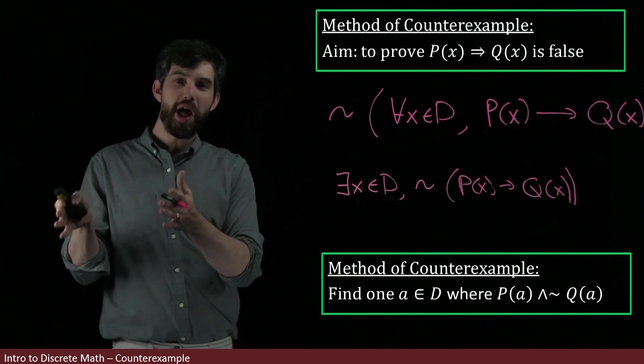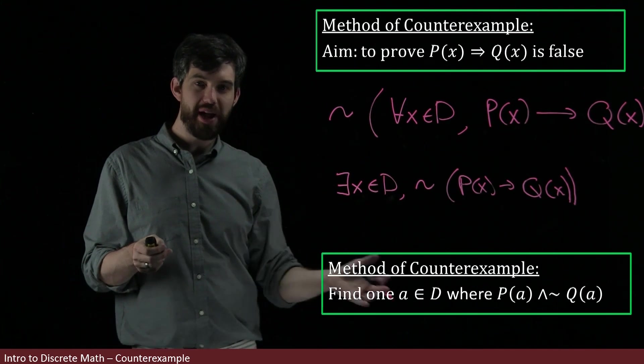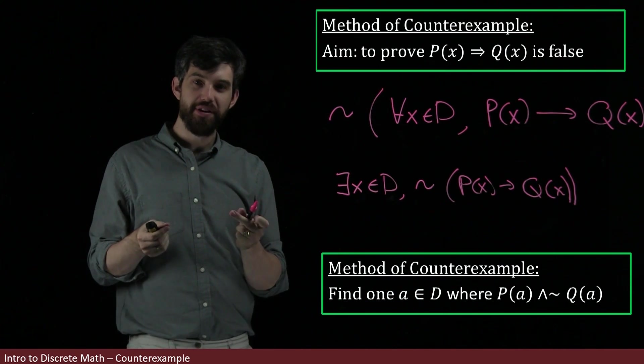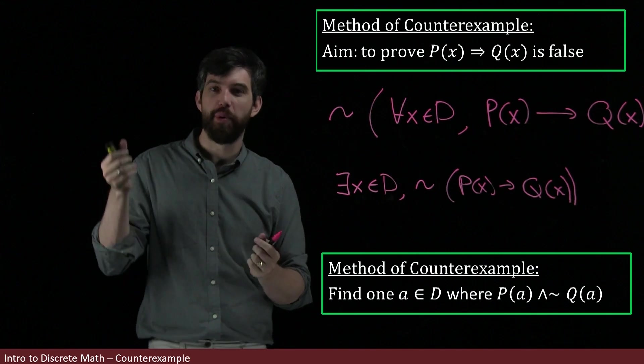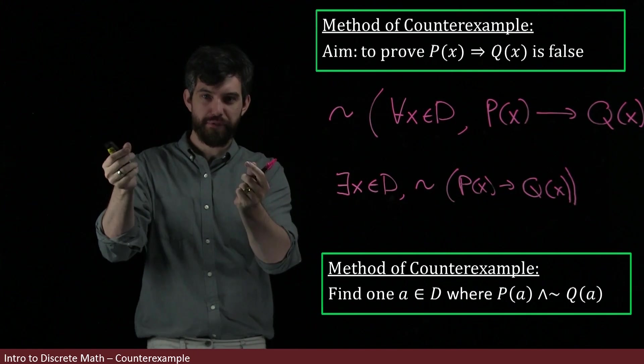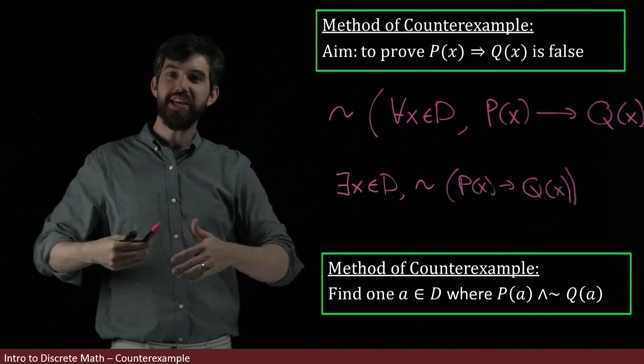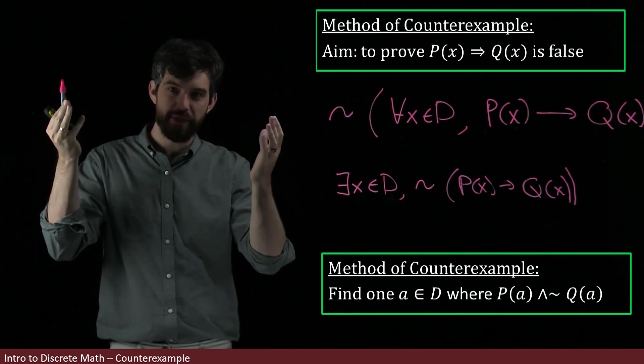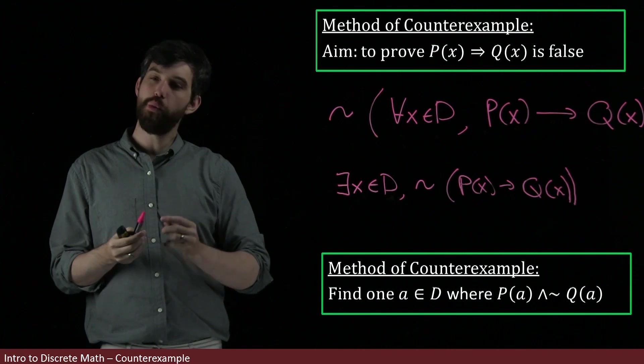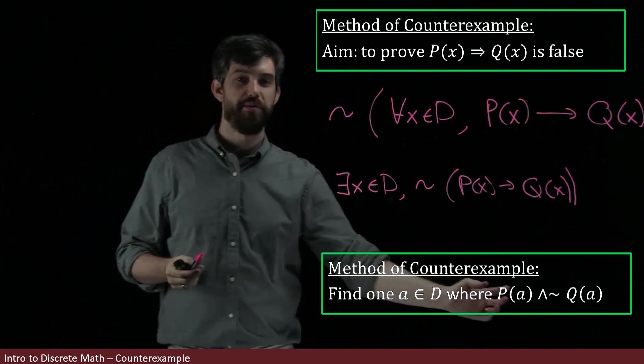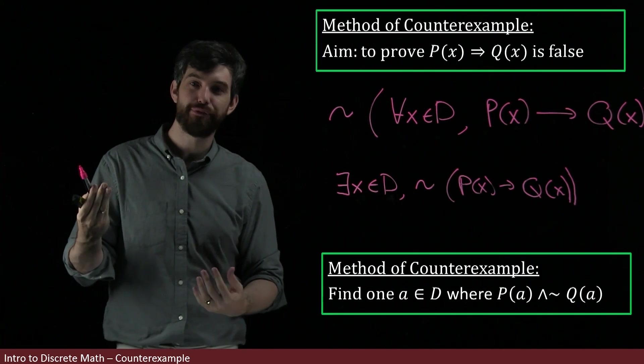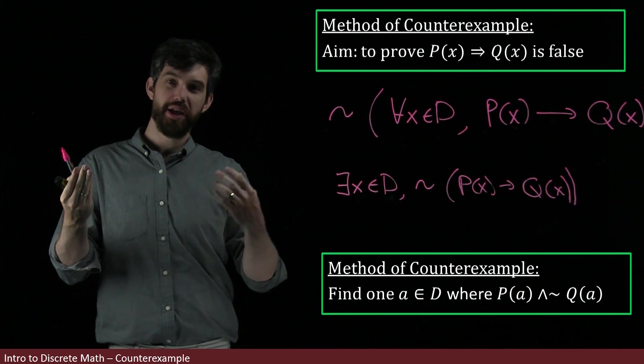So for instance, in the prior example, what my domain was, was pairs, a and b. And we had found that one example, minus four for a and three for b, where the assumption was true. This is the P of a, the a squared greater than b squared, where that was true, the assumption. But where the conclusion, which is going to be the Q of a, was false, namely that the minus four was not going to be bigger than the three.